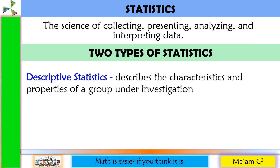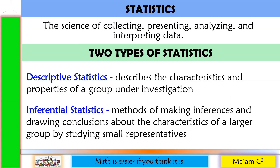The first one is descriptive statistics, which describes the characteristics and properties of a group under investigation. Meaning, you already have the data and you just have to describe it. The other type is inferential statistics — methods of making inferences and drawing conclusions about the characteristics of a larger group by studying small representatives. Meaning, you are going to make predictions or inferences based on the data that you already have.